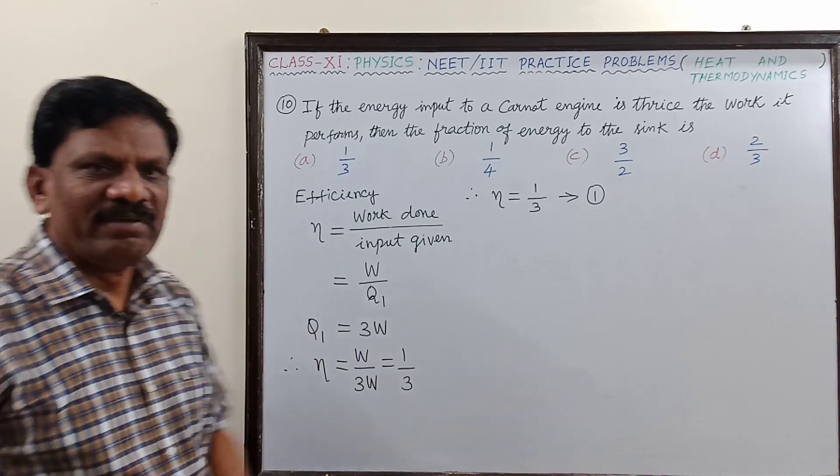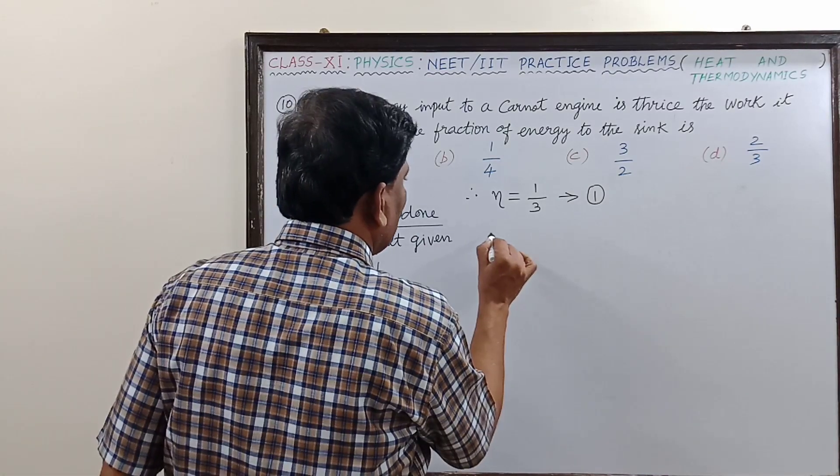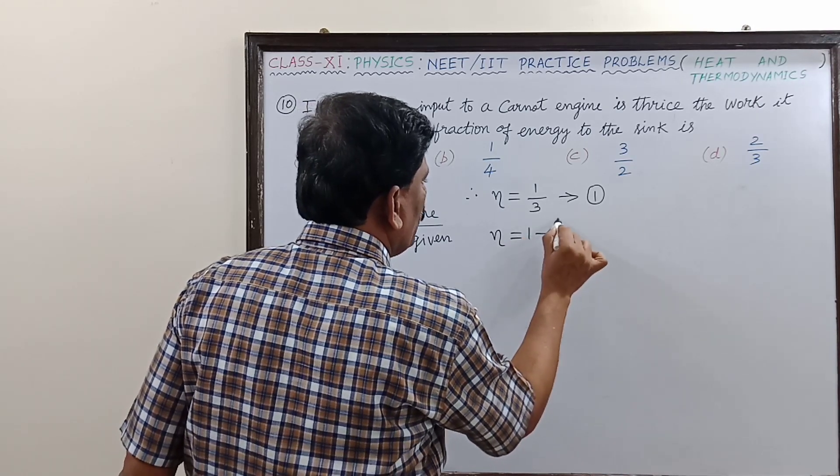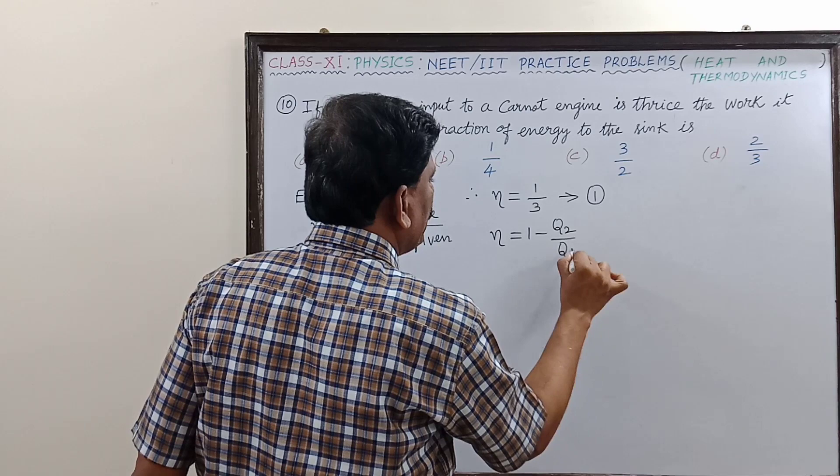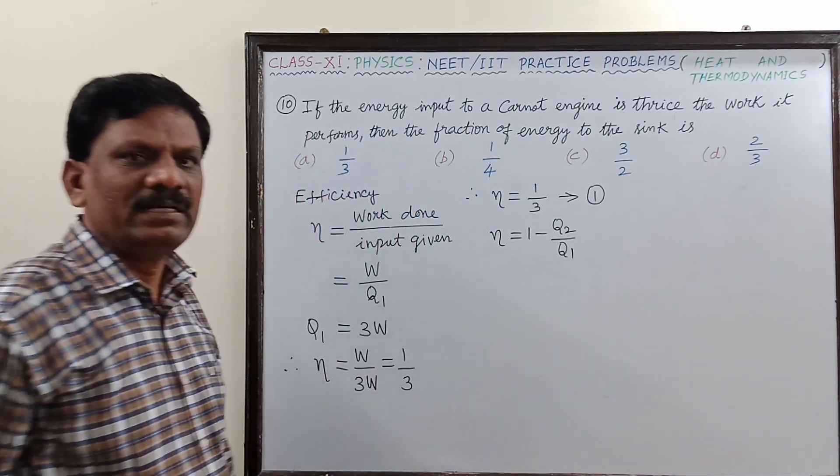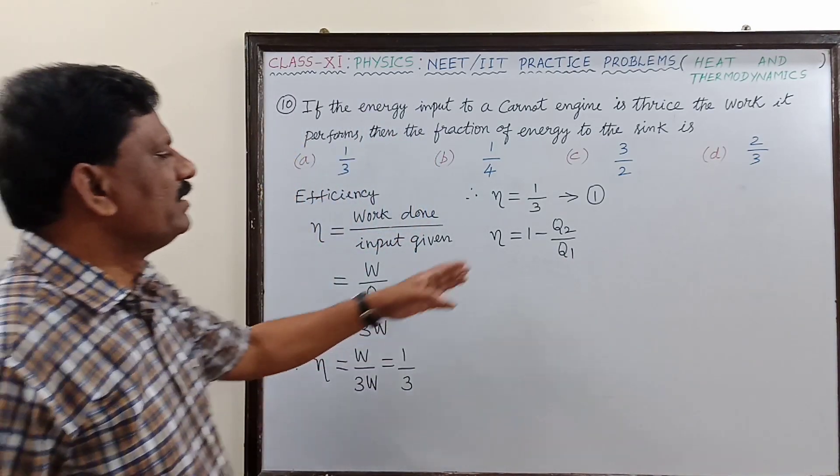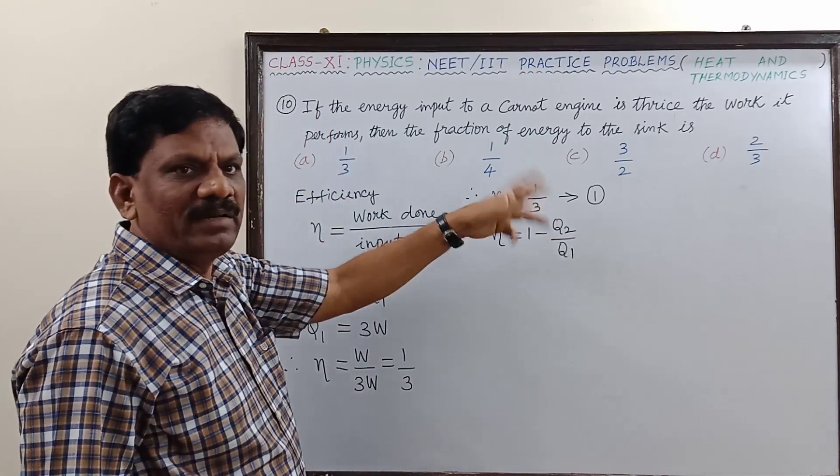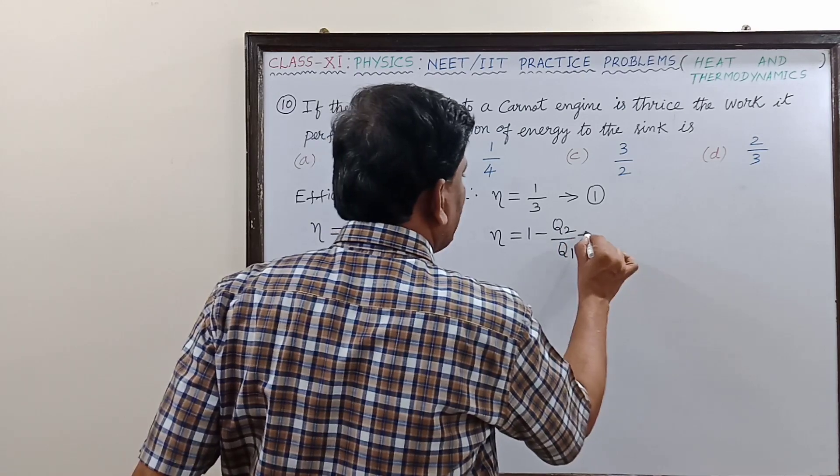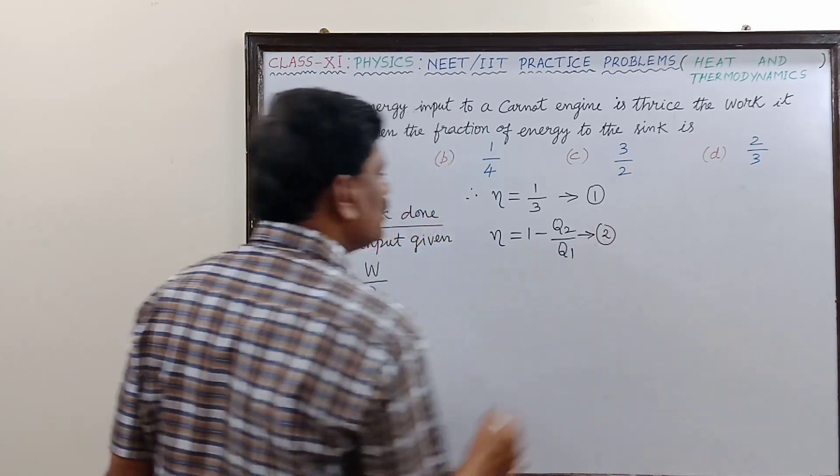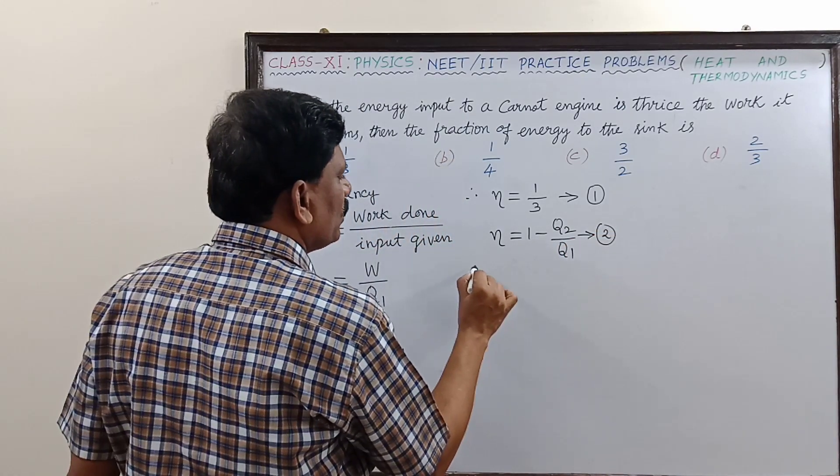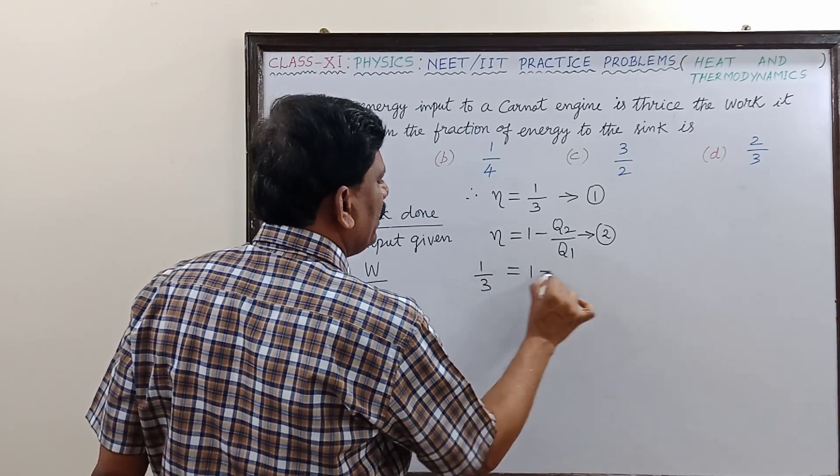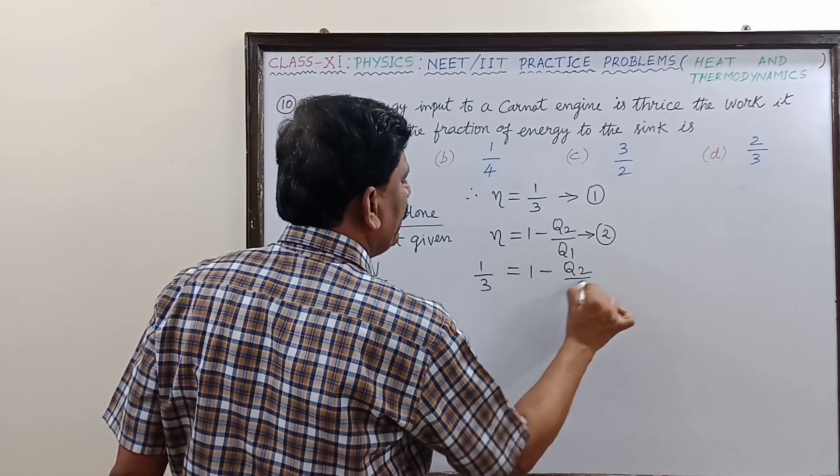By formula we know that efficiency is also equal to 1 minus Q2 by Q1. So I am going to equate the right hand sides of equations 1 and 2. So 1 by 3 is equal to 1 minus Q2 by Q1.